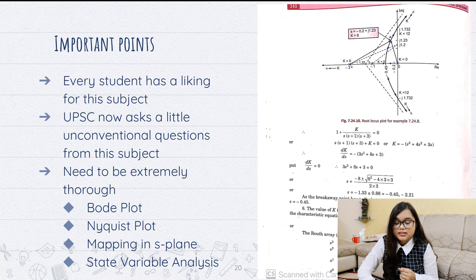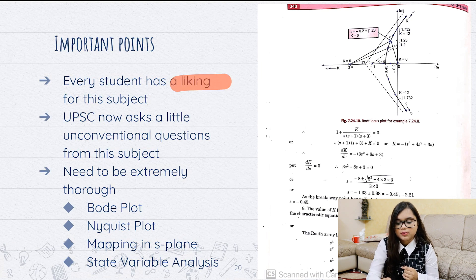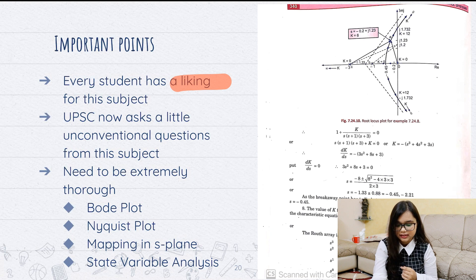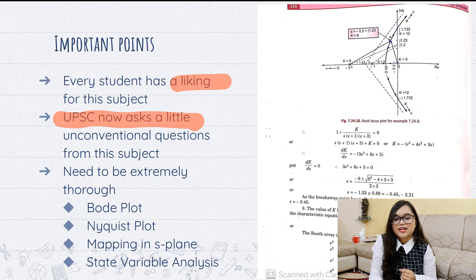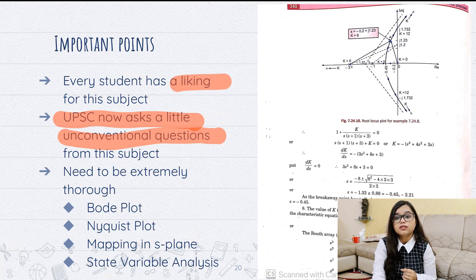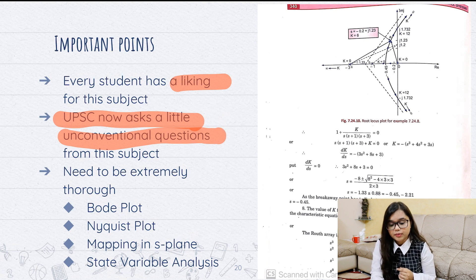The main thing about Control Systems is that every student of electrical engineering has some kind of a liking towards this subject — it is a very nice subject. The problem is that UPSC also knows we like Control Systems, so they have now begun asking quite unconventional types of questions from this subject. If you look at the questions of the past two or three years, you will see that there are no very obvious questions anymore.